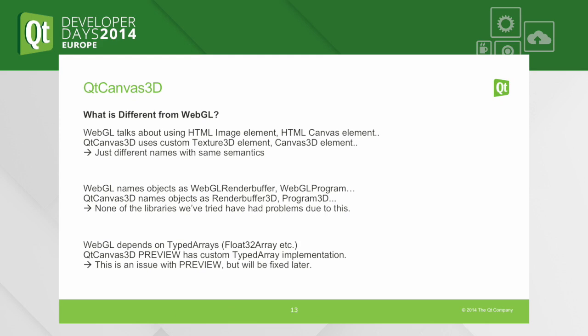WebGL depends heavily on typed arrays — a way of having massive amounts of typed data in JavaScript and passing it efficiently to the native side. We don't yet have that in the V4VM — the JavaScript engine in Qt Quick. So the preview has a custom typed array implementation, but I stress this is the preview only. Once we get to the final release in Qt 5.5, there will be typed arrays available in the Qt Quick JavaScript engine and we'll switch over to using those. It will change the API from the preview a bit, but I see that as a positive thing.